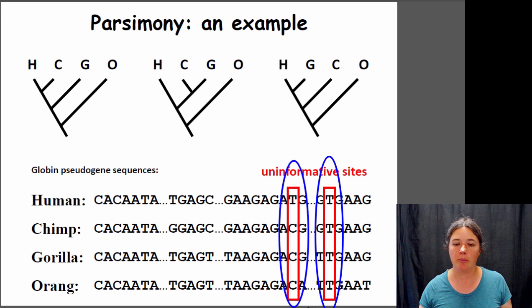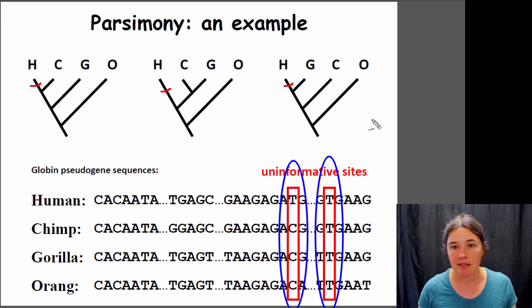This one here you might think seems a little bit better because only humans have a T and the other three have C's. But actually this doesn't really help you either, because all these guys have the ancestral trait and only humans have the derived trait. In order to build a tree, we need shared derived traits, not traits that only one organism has. If you map where that T evolved, it evolved after humans separated from everything else, but it doesn't help you to group them. What we need are shared derived traits.